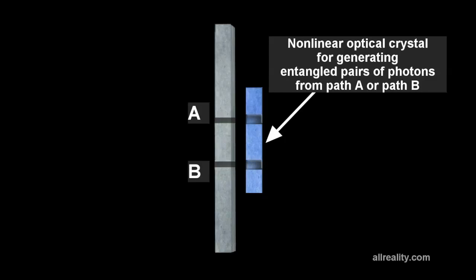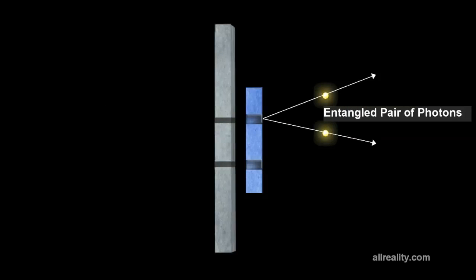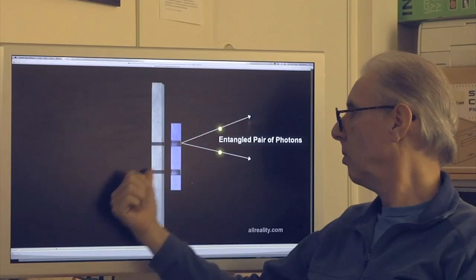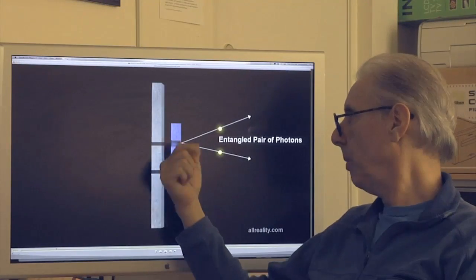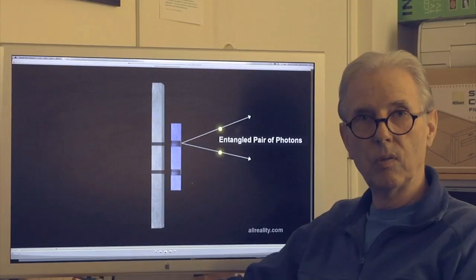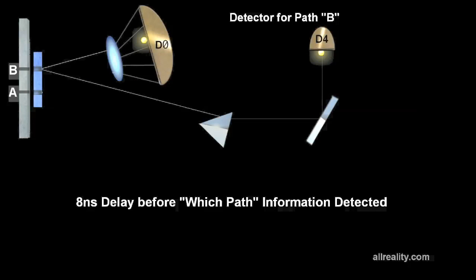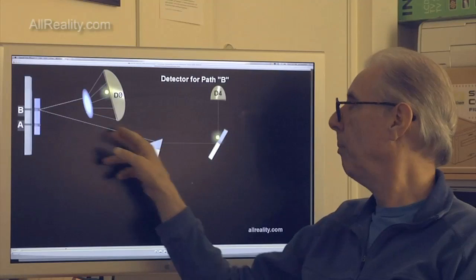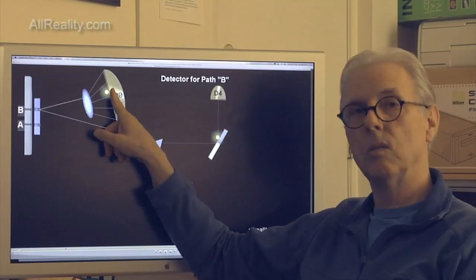So there is material on the other side of the slit. When the photon goes through A or B, it spits out an entangled pair of photons. One half of the pair gets registered on the screen.